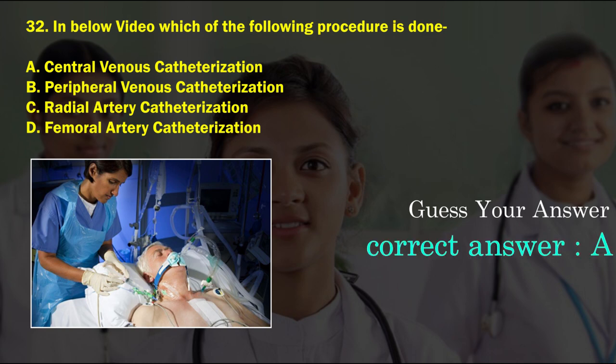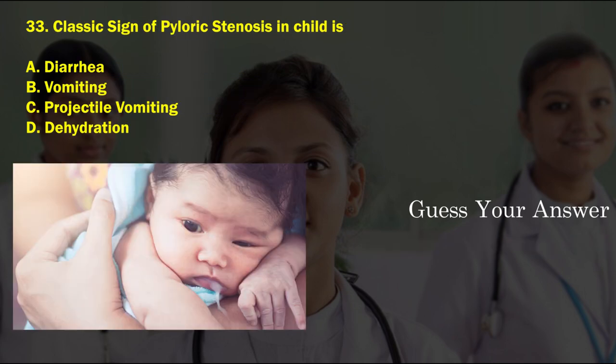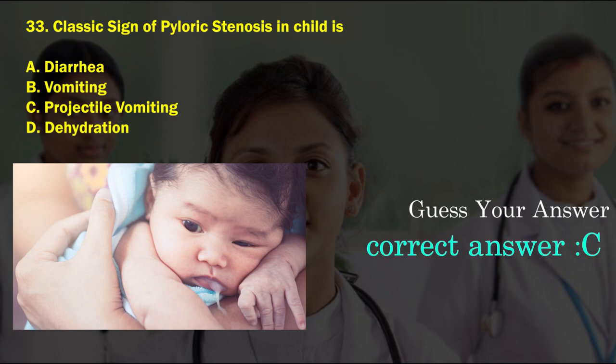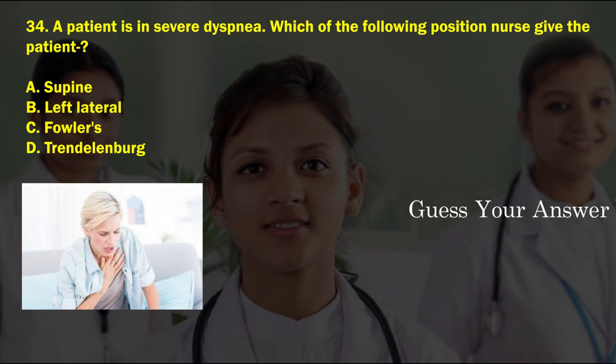The classic sign of pyloric stenosis in a child — option A: diarrhea, option B: vomiting, option C: projectile vomiting, option D: dehydration. The correct answer is option C, projectile vomiting.